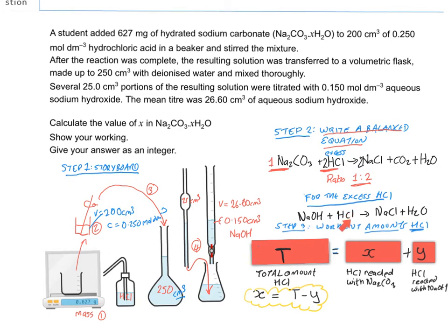Now the third step is to work out your amounts of HCl because you've got your amounts here as soon as you know the total amount of HCl. So we're told that the total amount of HCl, here's the concentration, it's 0.25 moles per dm cubed and there's the volume. So we've got the total amount of HCl that we had at the start.